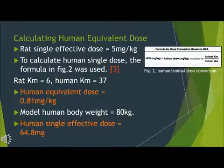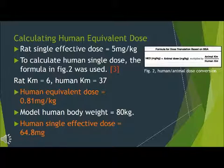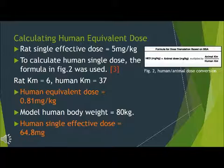Calculating human equivalent dose. A single effective dose in a rat is 5 milligrams per kilogram. To calculate the single dose needed for a human, the formula in figure 2 can be used. In a rat, km equals 6, and in a human, km equals 37. Therefore, a human equivalent dose is equal to 0.81 milligrams per kilogram. The model human body weight is 80 kilograms, so a single effective dose will be 64.8 milligrams.